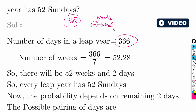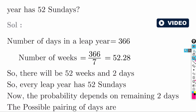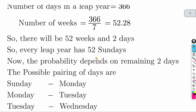We count weeks by dividing 366 by 7. This gives 52 weeks and 2 extra days. So 366 days = 52 weeks + 2 remaining days. Every leap year has 52 Sundays guaranteed.